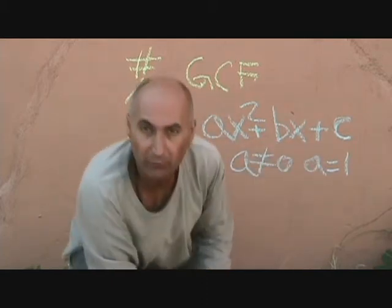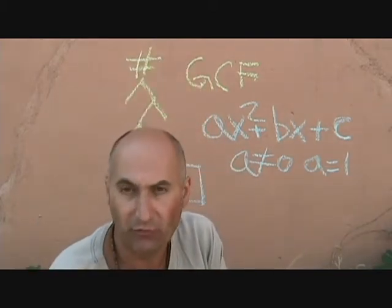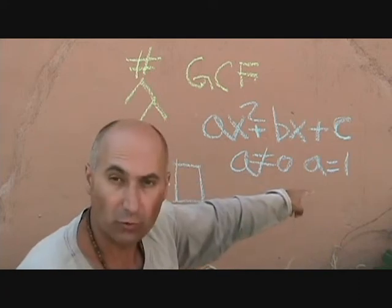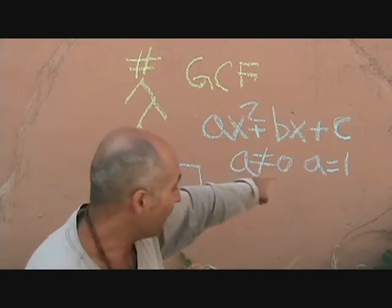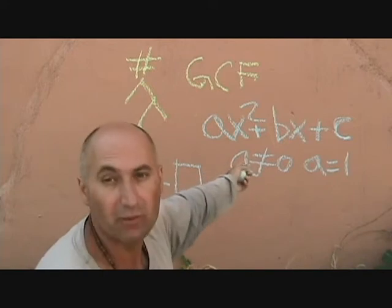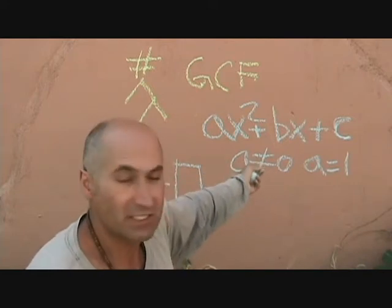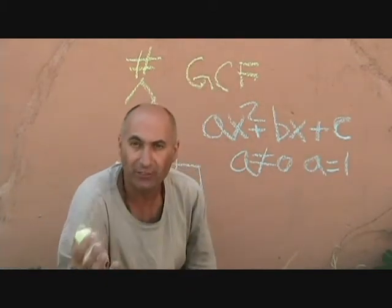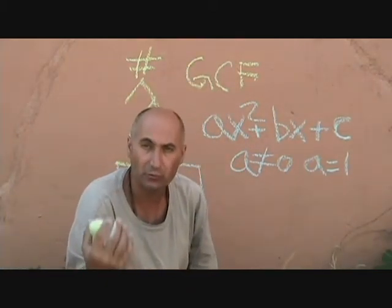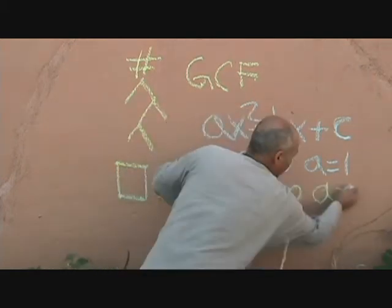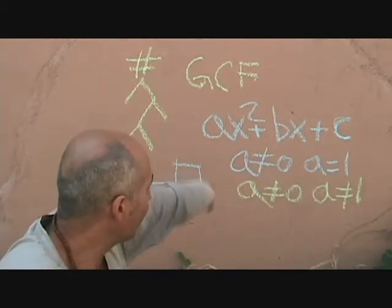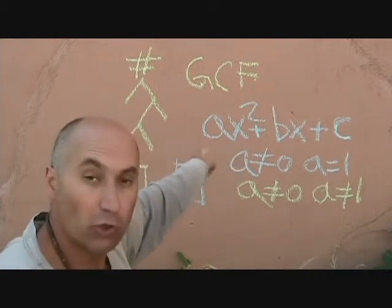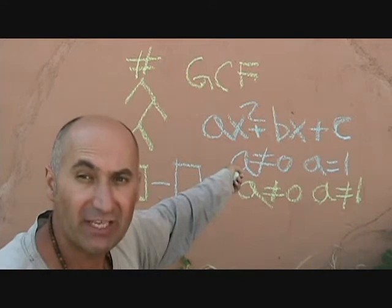What we're going to talk about right now is complex trinomial factoring, where a is not equal to one. So a can't equal zero, and a doesn't equal one — because if it equaled one, that's simple trinomial factoring. Complex trinomials are of the same form ax² + bx + c, where a doesn't equal zero and a doesn't equal one. So we actually end up with a number — a coefficient — in front of the x².